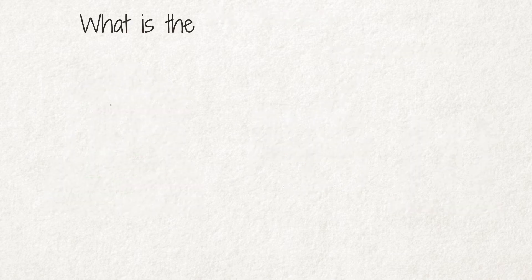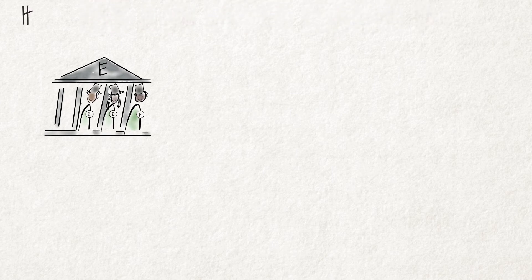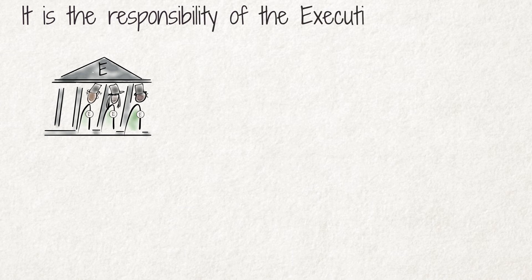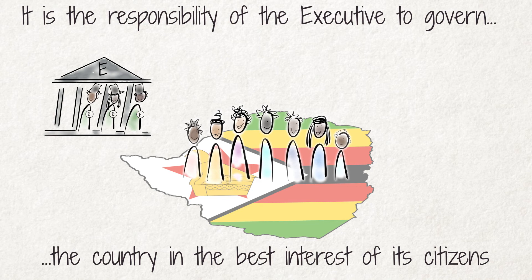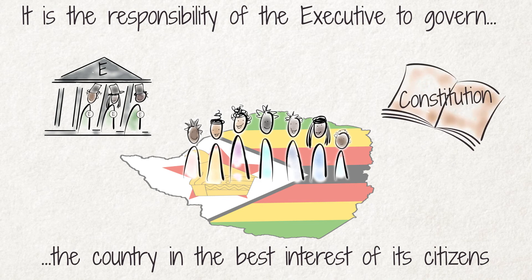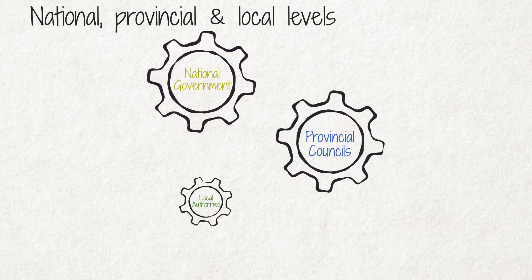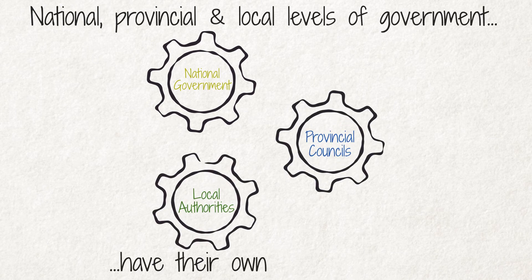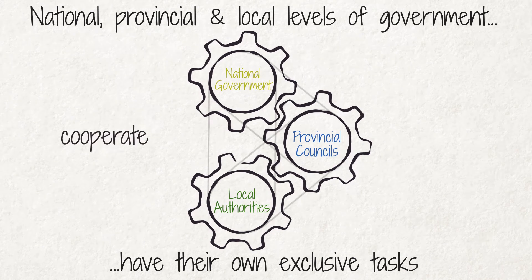Now let's talk about what the executive is responsible for and its tasks. It is the responsibility of the executive to govern the country in the best interests of its citizens and in compliance with the Constitution. The executives at the national, provincial, and local levels of government have their own exclusive tasks but must cooperate with each other.